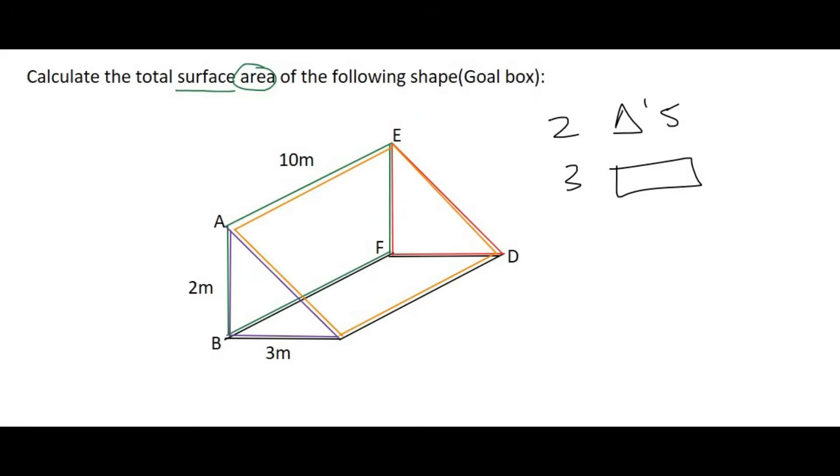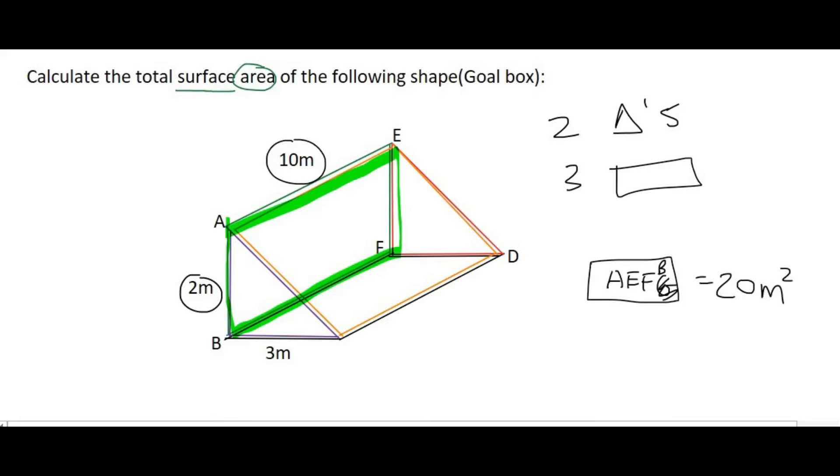Let's start off with this rectangle over here. We know that the area of a rectangle is length times breadth. The length of that rectangle is 10, and its breadth or its height is 2. So the area of that rectangle, we'll call it AEFB, that's going to be 10 times 2, which is 20, and area is always to the power of 2, so it'll be 20 meters squared.